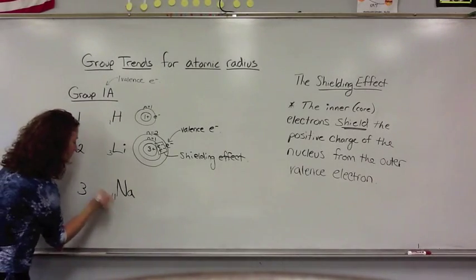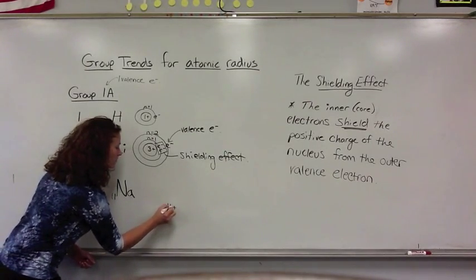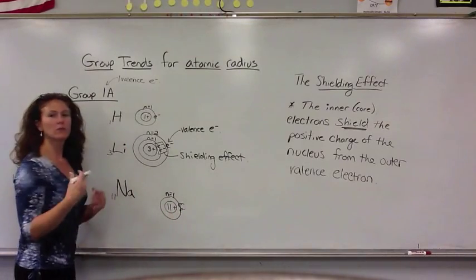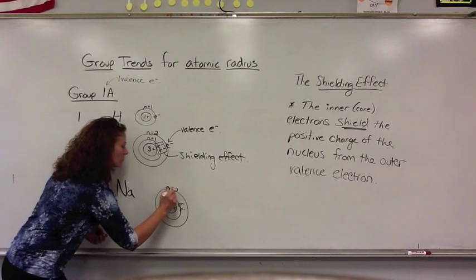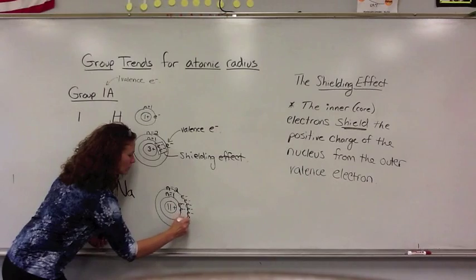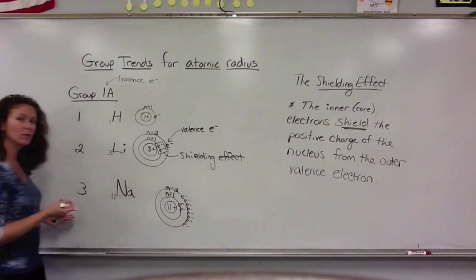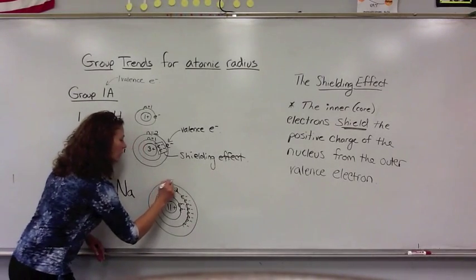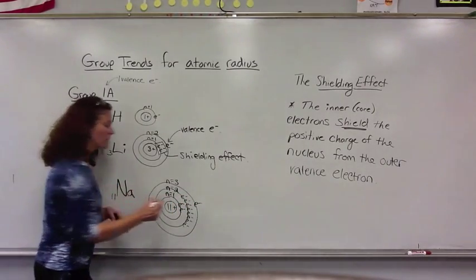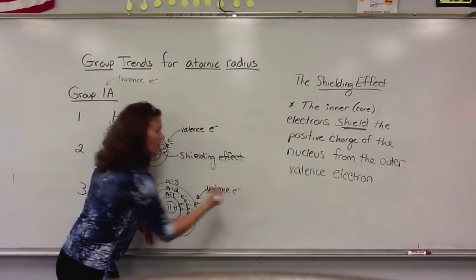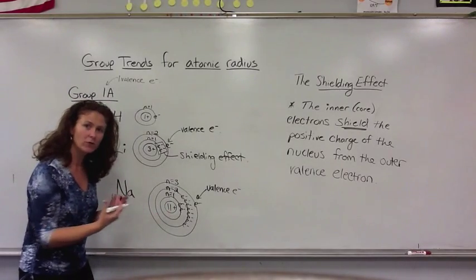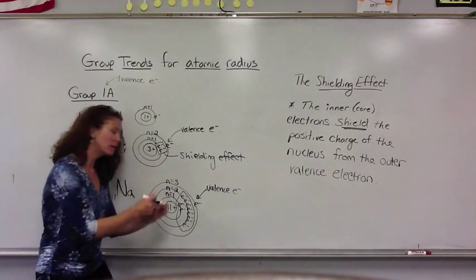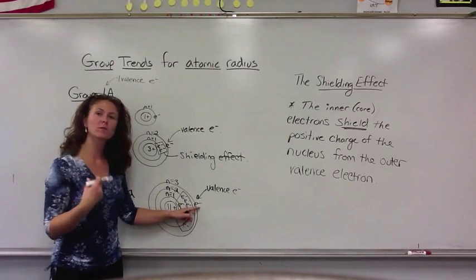Now let's take a look at sodium. Its atomic number is 11, so it has 11 protons in the nucleus. The first energy level has two electrons, the second energy level has eight electrons, and the third energy level is now being filled — n equals 3 — because it is in the third period. There is one electron in that third level. This valence electron is much further away from the positive charge of the nucleus because all of the inner electrons are causing the shielding effect, blocking the nucleus from attracting this outer electron. So this outer electron is much more loosely held than the others.